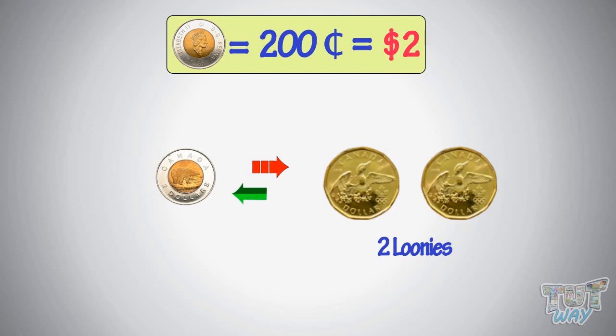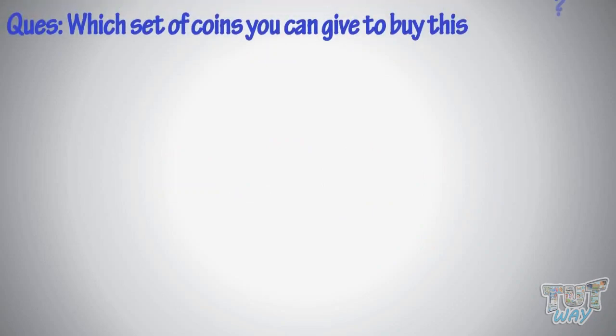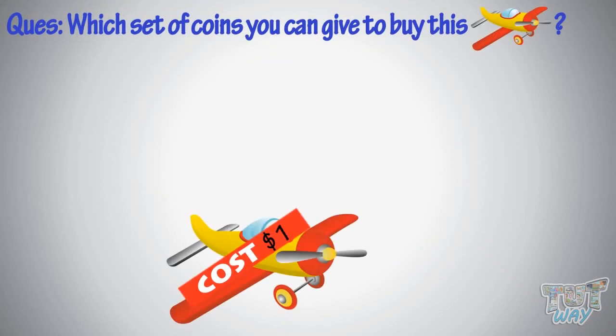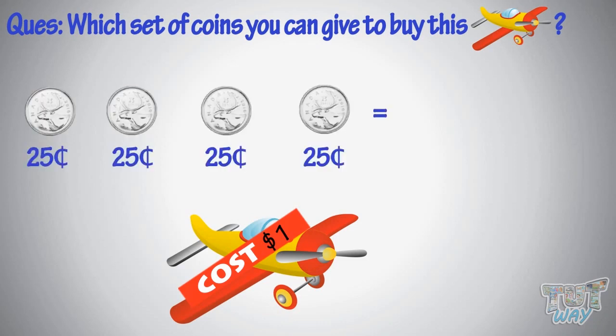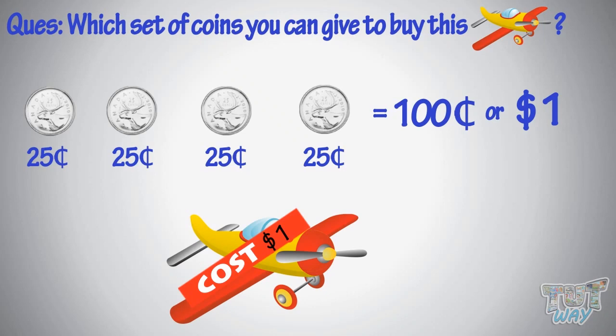Let's take a few examples. Now, which set of coins can you give to buy this toy? You can give four quarters to make a dollar or 100 cents. Many ways can be there — you can use smaller coins, too.